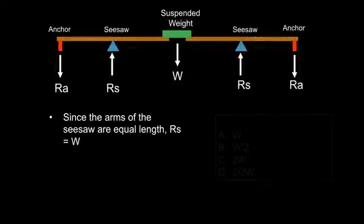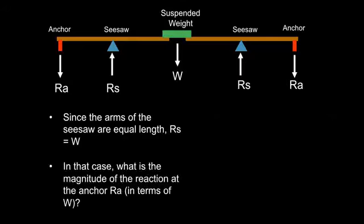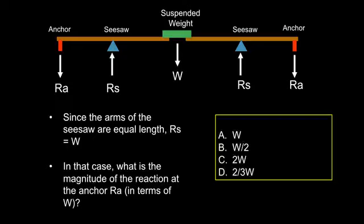We need equilibrium — the sum of the forces in the vertical direction must equal zero, therefore the reaction at the seesaw supports must be up. Let's define the seesaw reactions as Rs. Since the arms of the seesaw — the sides to the right and to the left of the support — are of equal length, Rs must equal W, meaning the seesaw support reaction must equal that suspended weight. In that case, what is the magnitude of the reaction at the anchor, Ra, in terms of W? Do you think Ra is equal to W, W over 2, 2W, or 2/3 W?